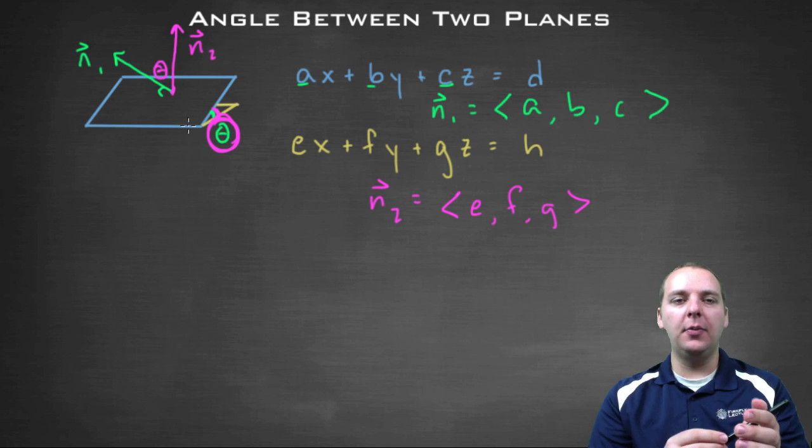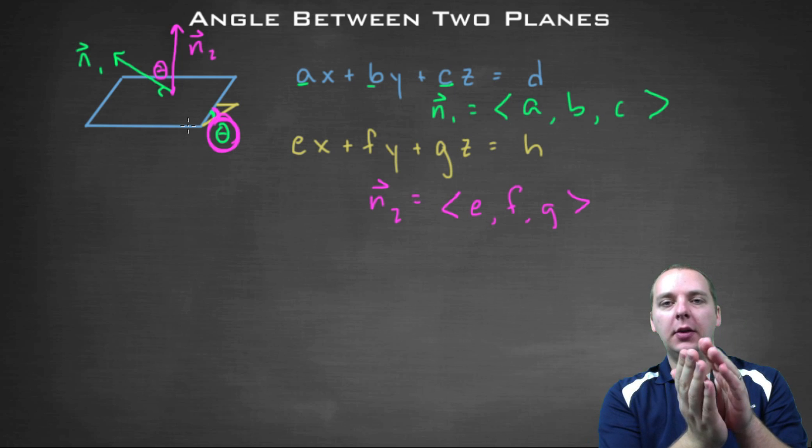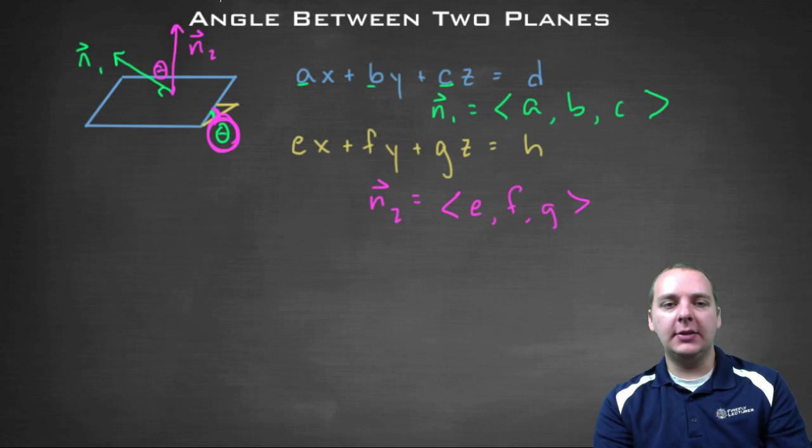And if you think about it for a minute, you'll convince yourself that this is true. The wider that the blue and yellow planes get from each other, that's going to widen this angle as well.